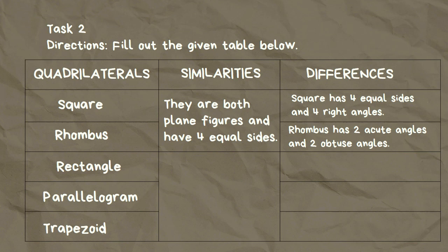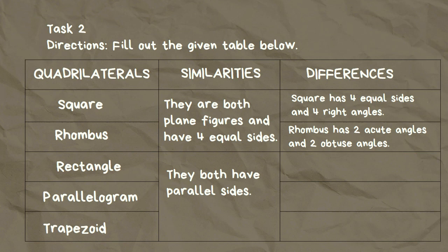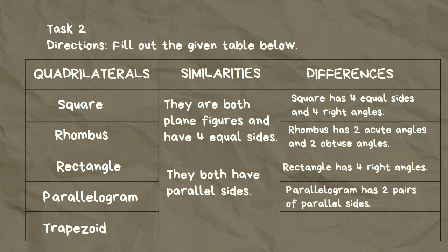The similarities of rectangle, parallelogram, and trapezoid are they all have parallel sides. While their differences are: rectangle has four right angles, parallelogram has two pairs of parallel sides, and trapezoid has only one pair of parallel sides.